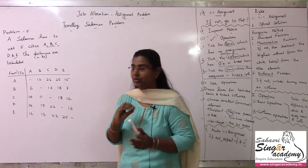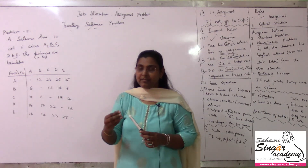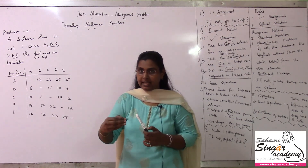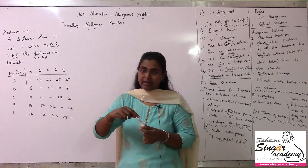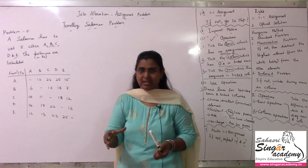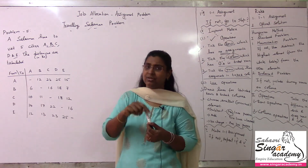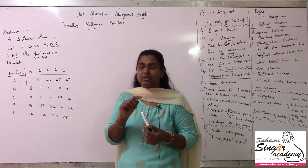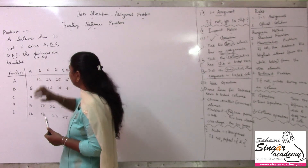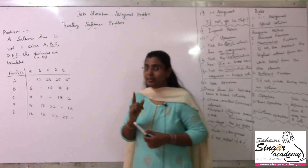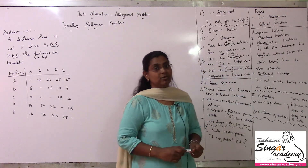In the Traveling Salesman Problem, the salesman starts from city A, can travel to B, C, D, E, then come back to A — or travel to other places. If he starts from one place, he has to cover all the places and then reach the same place at the end. Distance is minimized, so it is a minimization problem. With 5 cities, we have 5 columns and 5 rows — so it is a balanced problem.